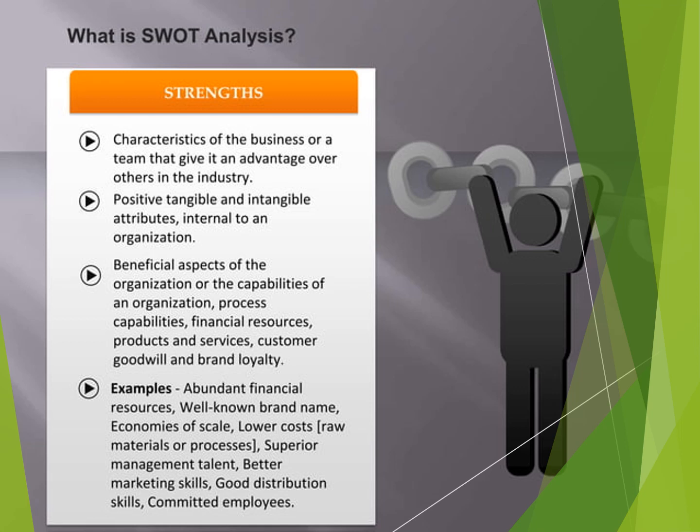Strength is a characteristic of a business or team that gives it an advantage over others in the industry. It includes positive, tangible, and intangible attributes internal to an organization — such as process capabilities, financial resources, products and services, and customer goodwill and brand loyalty. Examples include abundant financial resources, a well-known brand name, economies of scale, lower-cost raw materials, better talent, marketing skills, management skills, good distribution channel partners, and committed employees.